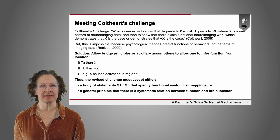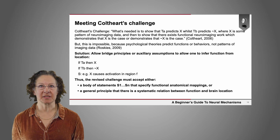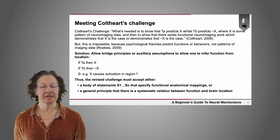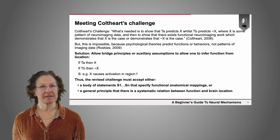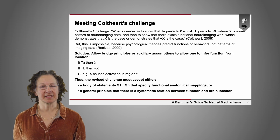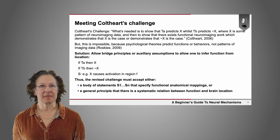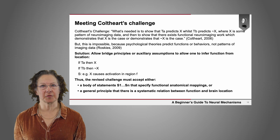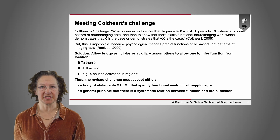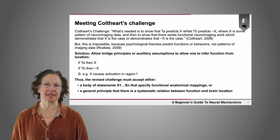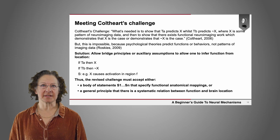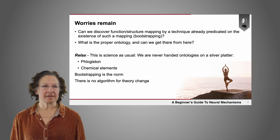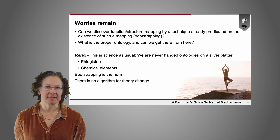But there is a way to make sense of the challenge, and that is to allow bridge principles or auxiliary assumptions to infer function from location. If theory A predicts X and theory B predicts not X, and you add an auxiliary assumption on the order of 'X causes activation in region F,' then that's something you might be able to test with neuroimaging. A revised challenge must accept either a body of statements specifying functional-anatomical mappings or a general principle that there is some systematic relation between function and brain location. We actually have evidence that there is such a systematic relation, so there's very good reason to think neuroimaging can meet Coulthart's challenge — and there are in fact many neuroimaging experiments that now allow this kind of adjudication.